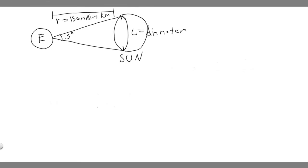In this problem, we're told the sun subtends an angle of about 0.5 degrees to us on Earth, 150 million kilometers away. Estimate the radius of the sun.